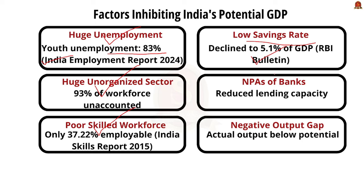The next most concerning factor is NPA of banks — that is Non-Performing Assets. Currently, the NPA of banks is very high, which has reduced the lending capacity of banks, which in turn affected the productive capacity of the economy because banks will not be open to lending further capital. With this, we have addressed holistically the body part of this question.